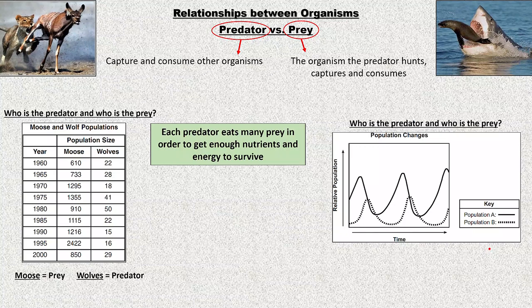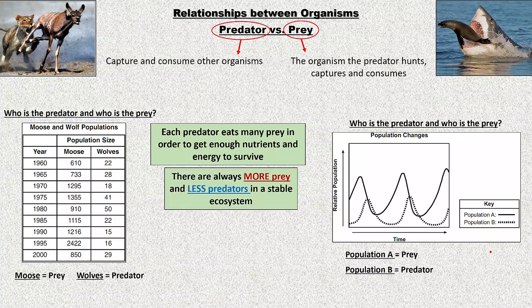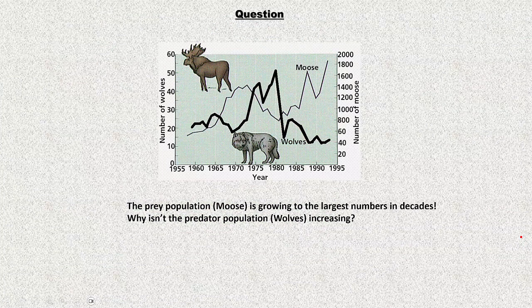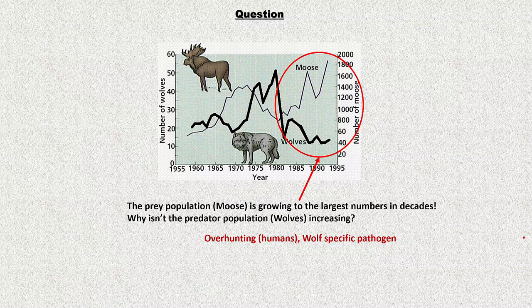The rule of thumb: there's always more prey and less predator in a stable ecosystem. If there are more predators than prey, the predators will eat all their food and then starve. Looking at the graph, the prey population — the moose — is growing to its largest numbers, but the wolf predator population is not increasing. There must be some external factor keeping it low, such as overhunting by humans or a pathogen specific to wolves.